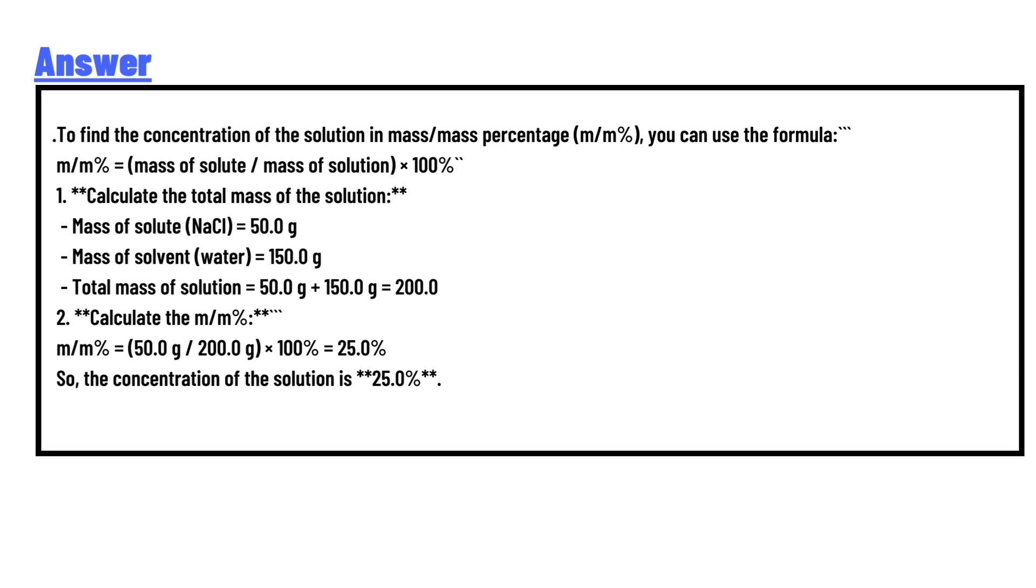Mass of solute (NaCl) is 50.0 g. Mass of solvent (water) is 150.0 g. Total mass of solution = 50.0 g + 150.0 g = 200.0 g. Now calculate the m/m%: